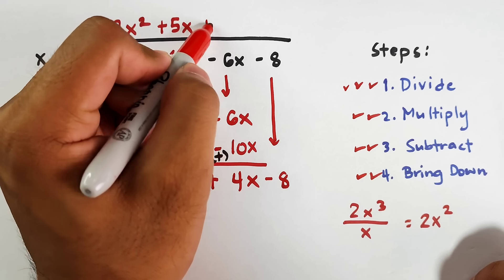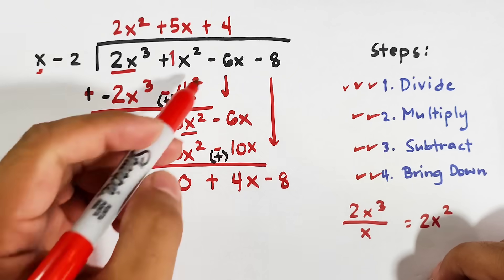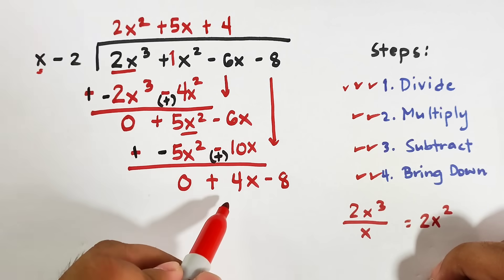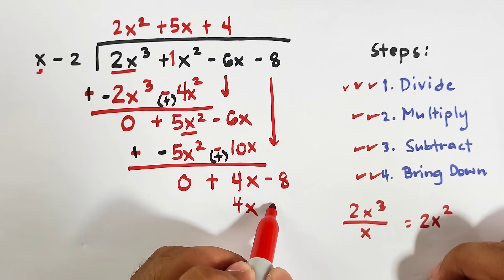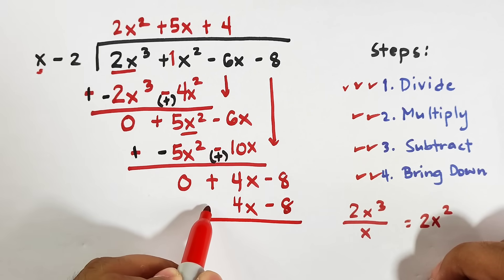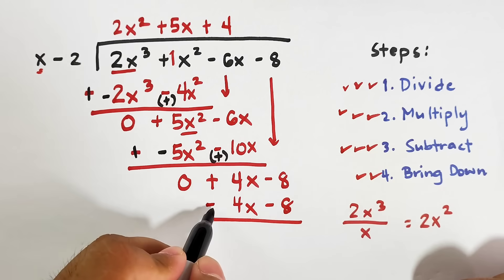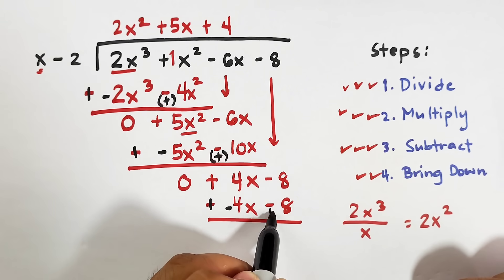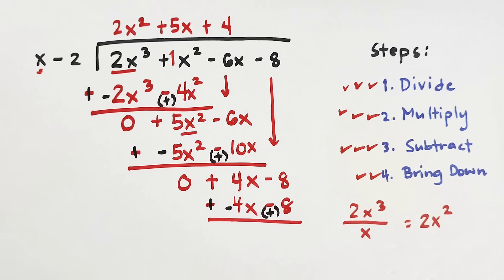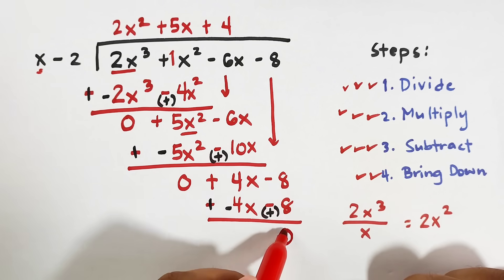We divide again: 4x divided by x is plus 4. Multiply: 4 times x is 4x, and 4 times negative 2 is negative 8. We subtract — the subtraction becomes addition, positive becomes negative, negative becomes positive. The result: 4x minus 4x is 0, and negative 8 plus positive 8 is also 0. There is no remainder.